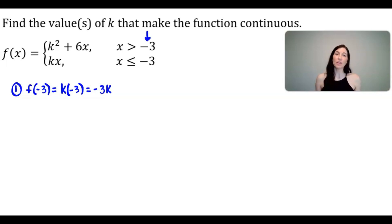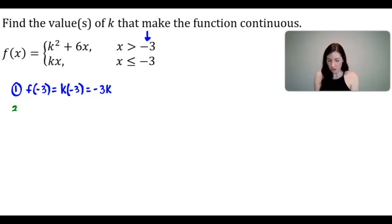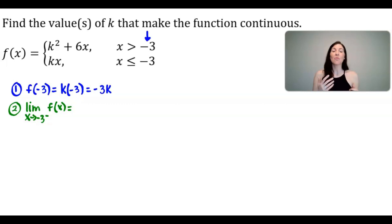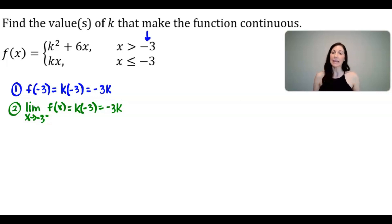For the function to be continuous, you also need to think about the limit as we approach negative 3 from both the left and the right. Step 2 is determining that limit from both sides. Approaching from the left, I'll use the bottom function — that's where x values are less than negative 3. Since K times x is a linear, continuous function, I can simply plug in negative 3 for x, giving me negative 3K.